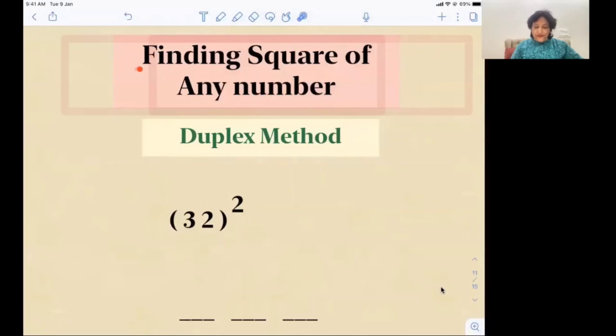In this video we will learn to find the square of any number by Duplex Method. Duplex Method is a method in Vedic Mathematics which is a general method that can be used for any number, not just specific numbers that should be near the base. Believe me, you can find the square of a number in seconds.